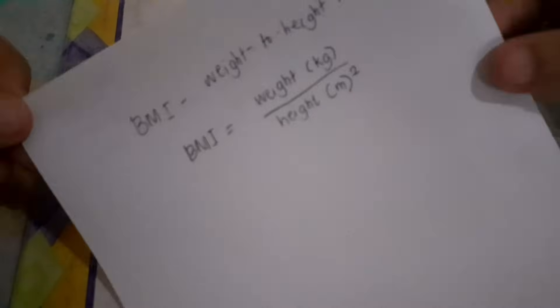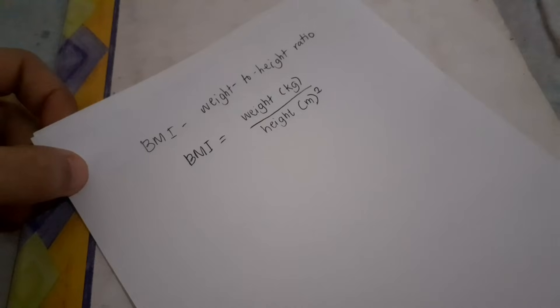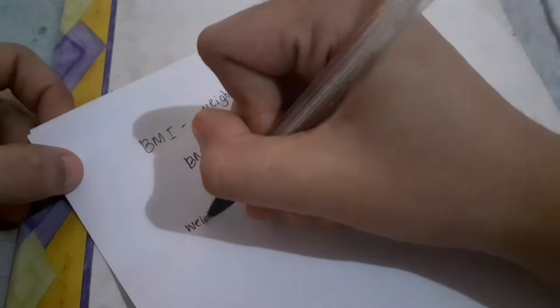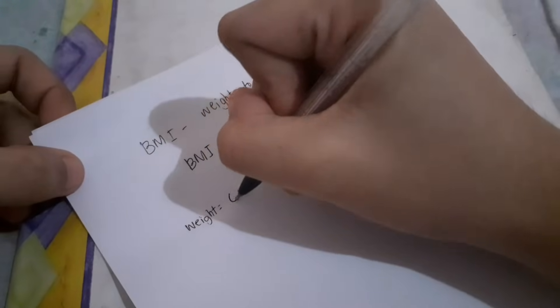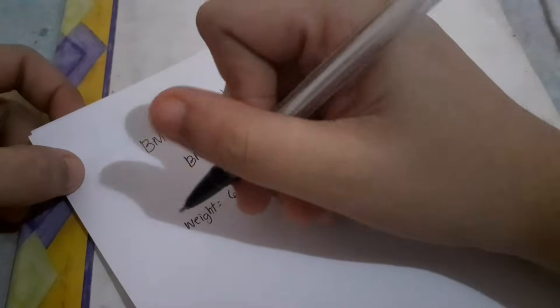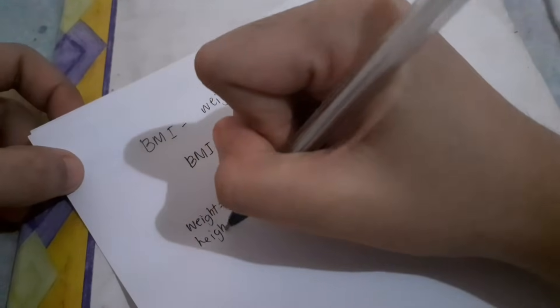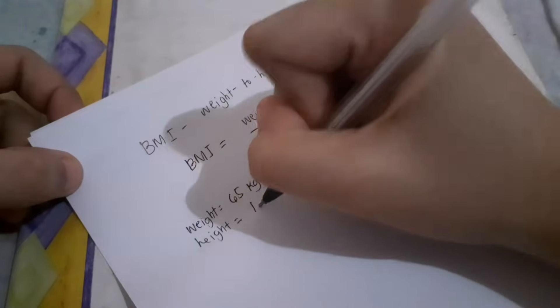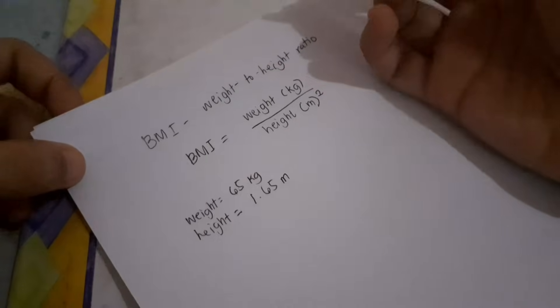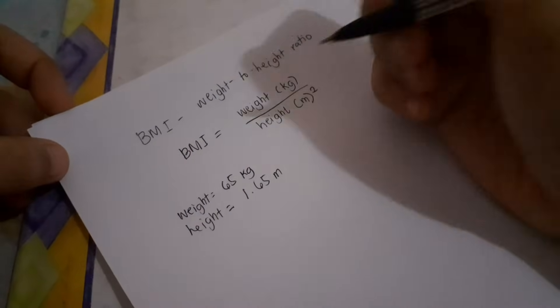So for example, your weight is 65 kilograms and your height is 1.65 meters. Let's compute for your BMI.